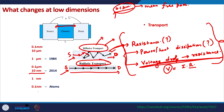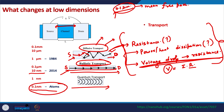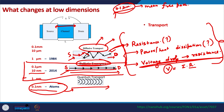If we scale down things even further to exactly atomic dimensions, the transport is no longer ballistic — it is quantum transport where the wave nature of the electron is quite explicit. At these dimensions, dealing with individual atoms, we need to deal with electron waves and electron wave functions. This course is mostly going to be about ballistic transport, but towards the end we will also touch upon quantum transport.